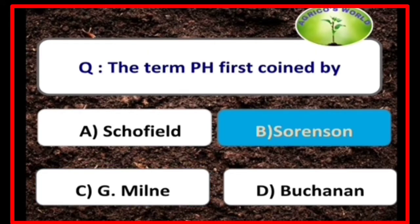The term pH was first coined by the scientist Sorensen, and the concept of PE was given by the scientist Silen.